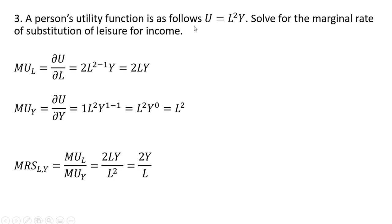Problem three: A person's utility function has a slightly different functional form, l squared times y. We want to solve for the marginal rate of substitution. The marginal utility of leisure is 2ly — the exponent 2 on l comes down in front and we subtract 1, leaving just l. For the marginal utility of income, the exponent on y is 1, so 1 minus 1 gives y to the power of 0, which equals 1. The marginal utility of income is therefore l squared. Forming our MRS, we divide 2ly by l squared, and canceling gives us MRS = 2y divided by l.